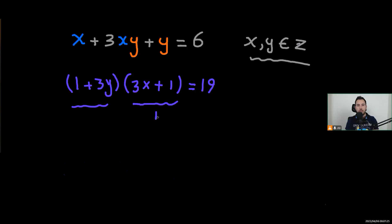So let's assume this is 1, this is 19, then we'll have 3x plus 1 equals 1. So x will be, I'm going to write it here, x will be 0. And if I write 1 plus 3y equals 19, y will be 6. So y will be 6.